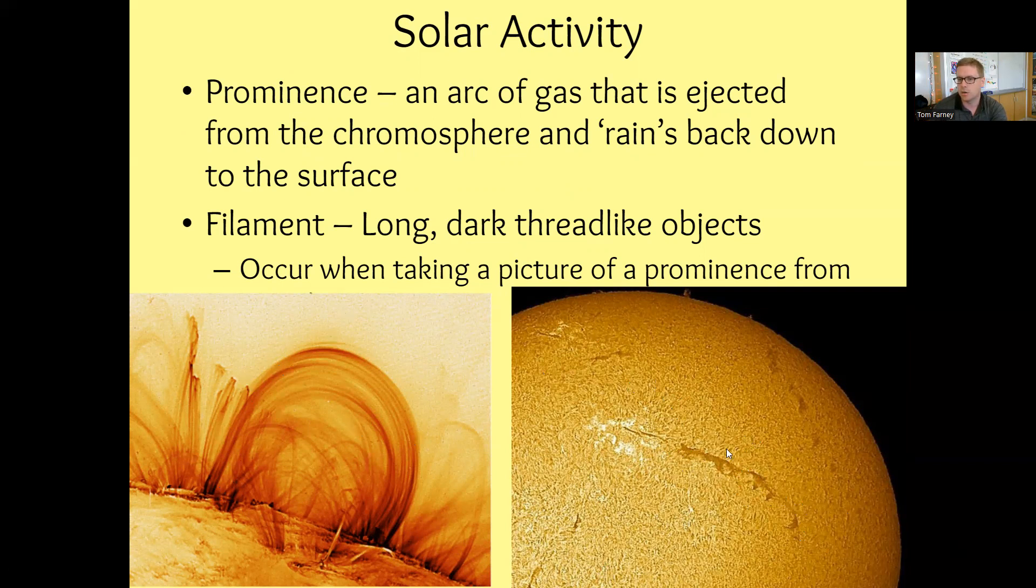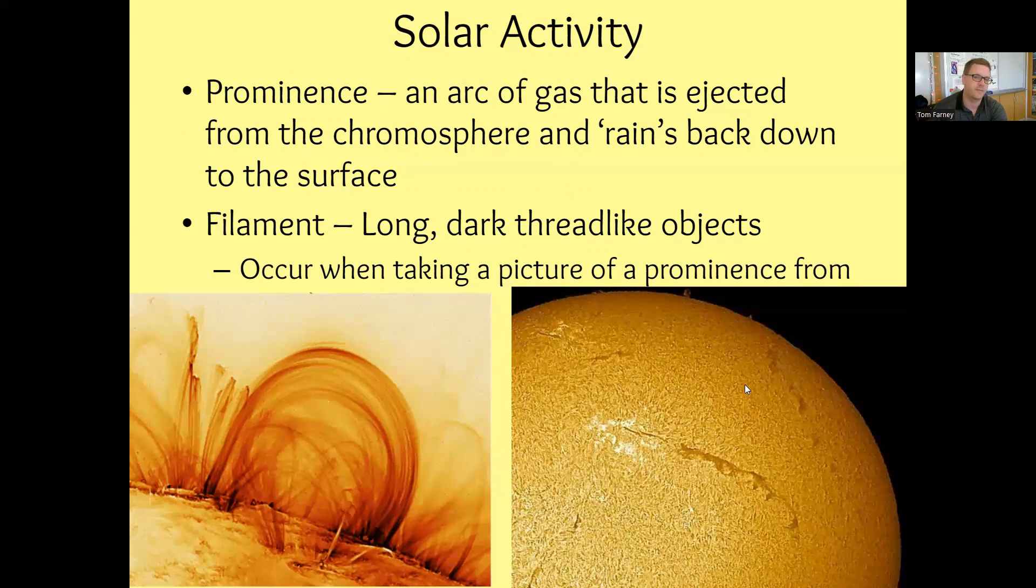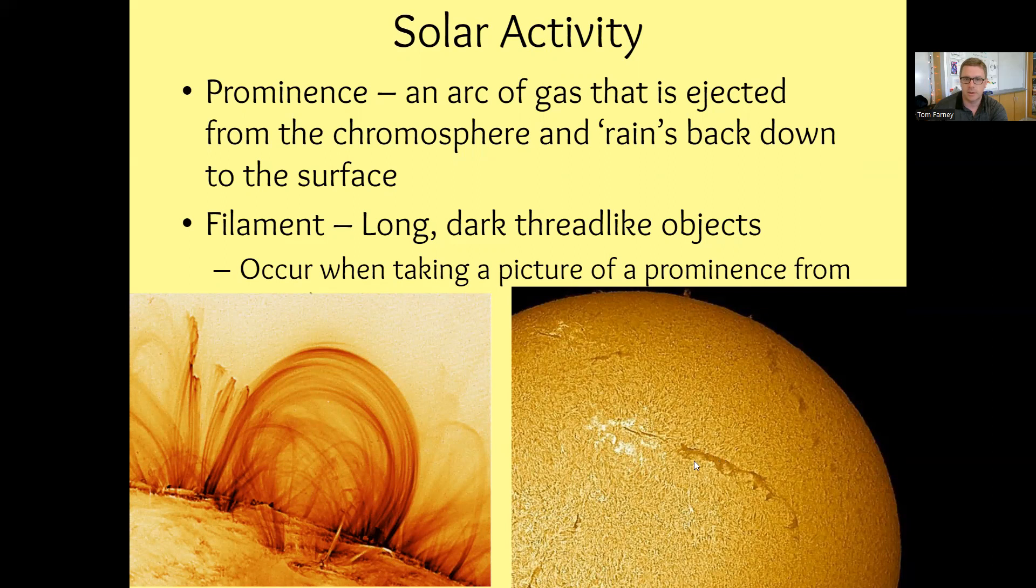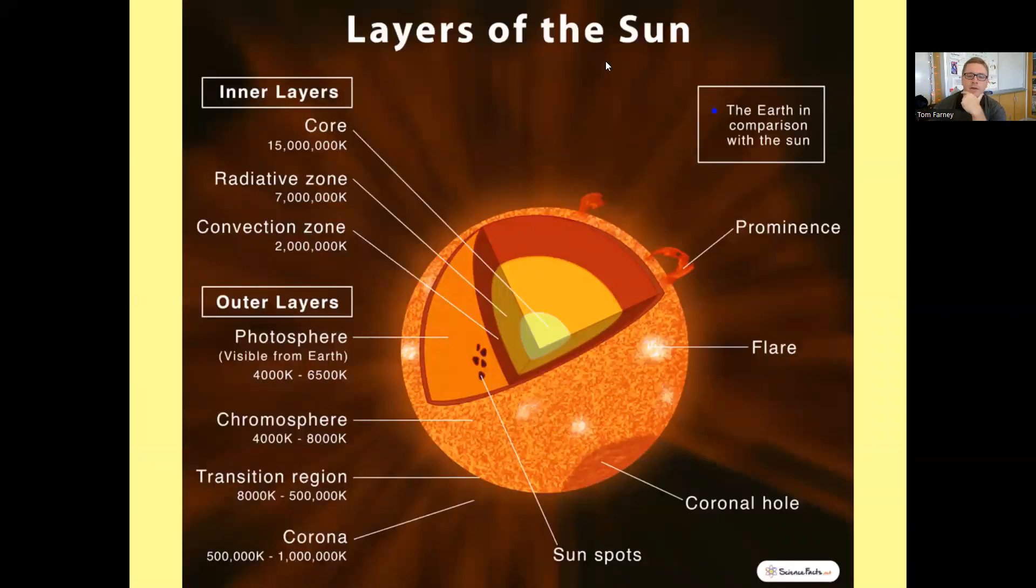They're long dark thread-like objects and they occur from roughly around the same region prominences are from. So that's where we see filaments. Filaments, prominences here. Here's a really good infographic section of the sun infographic layer.